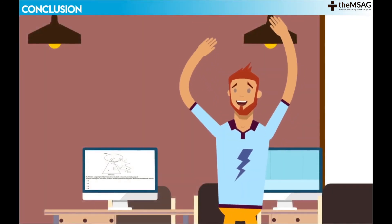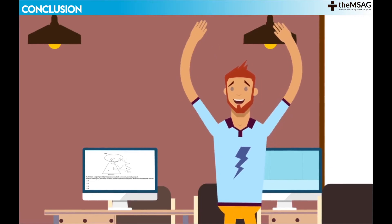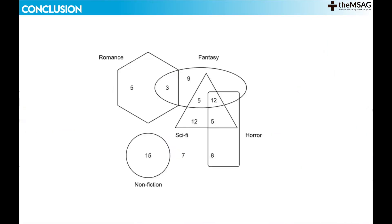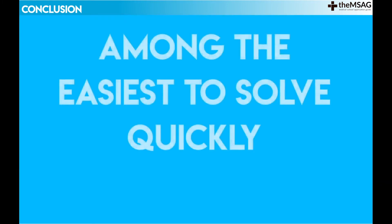We hope this video has demystified Venn diagrams and shown you how they can be tested within the decision-making subtest of the UCAT. Once you get over the initial shock value of some of the shapes and the number of overlaps, these questions can be among the easiest to solve quickly. Keep trying!